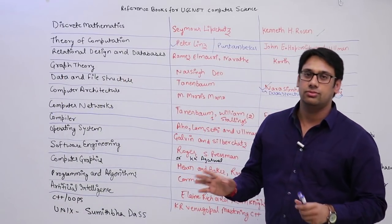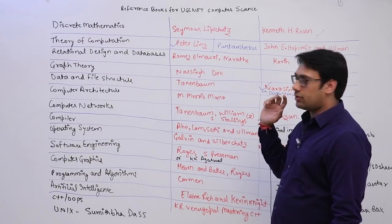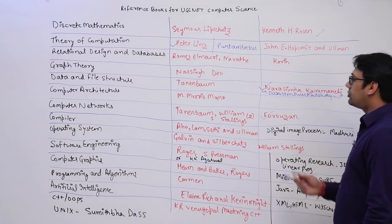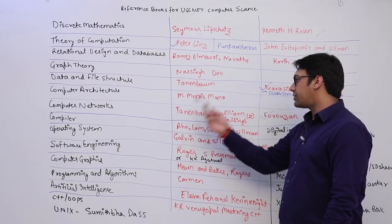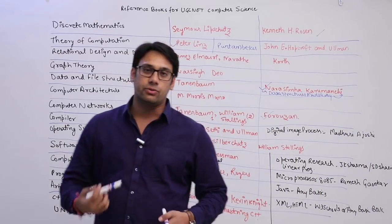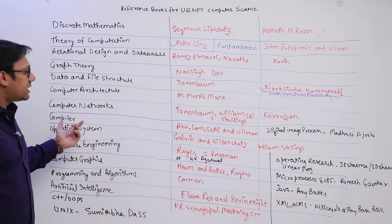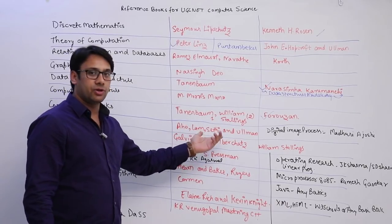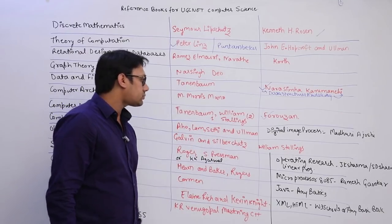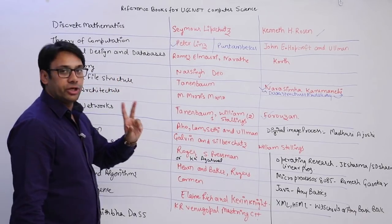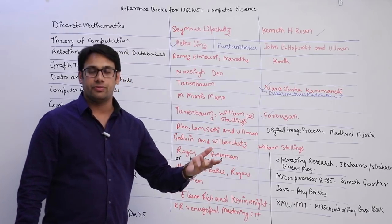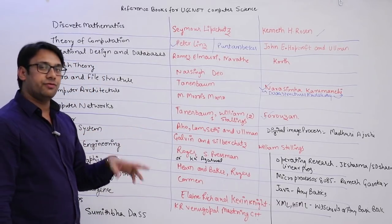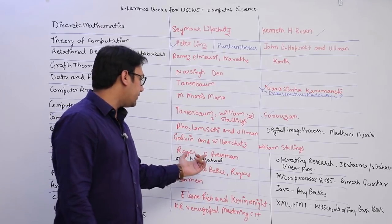For Computer Networks, the only book I suggest is Forouzan, though you can also refer Tenenbaum or William Stallings if you wish. Personally I only referred Forouzan and don't feel you need any other book. For Compiler Design, the only book you need is by Aho, Sethi, and Ullman. For Operating Systems, the only book you need is Galvin — William Stallings or Tenenbaum are options, but if buying just one book, Galvin is it.